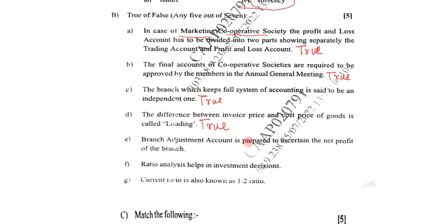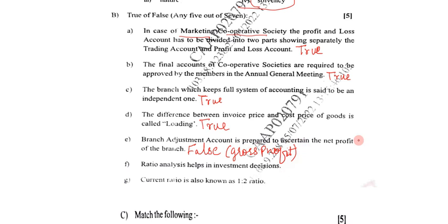Next: The branch adjustment account is prepared to ascertain the net profit of the branch. This statement is false. The branch adjustment account is actually prepared to ascertain the gross profit of the branch — not net profit. Hence this statement is false.